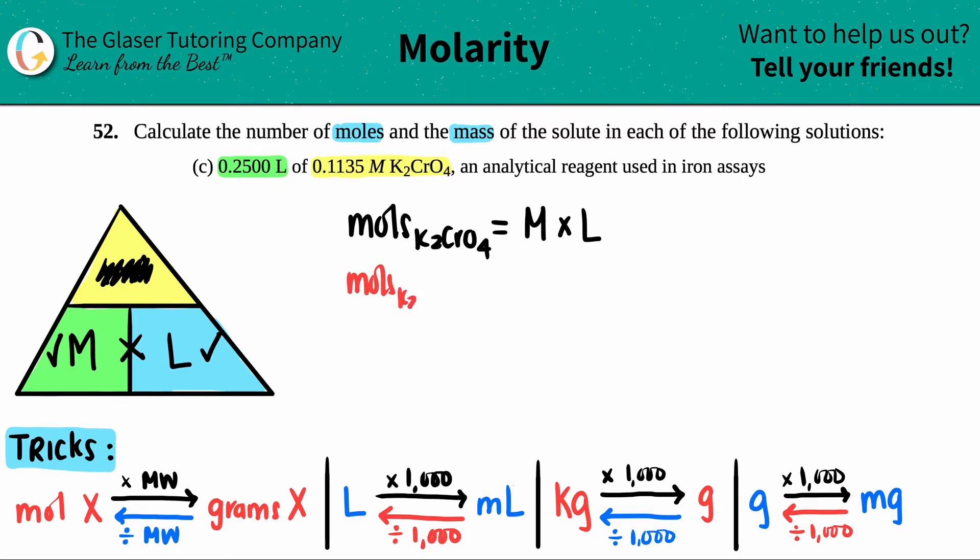Now let's just plug the numbers in. The moles of K2CrO4 equals the molarity, 0.1135 times 0.25. We have the least number of four sig figs for both of them, so four sig figs should be in the answer, 0.02838 moles. So one part done. We found out the amount of moles, 0.02838 moles.